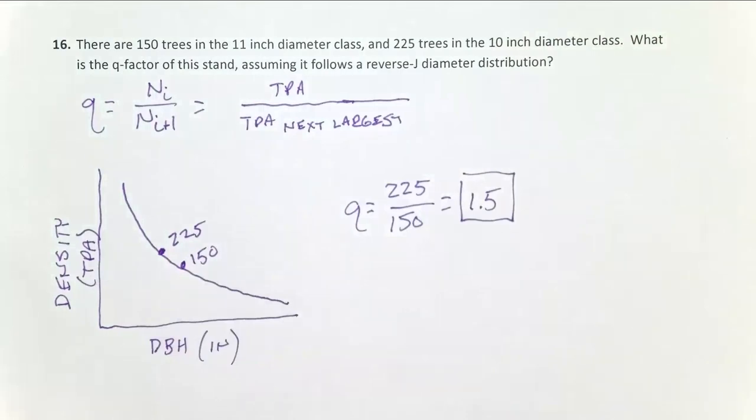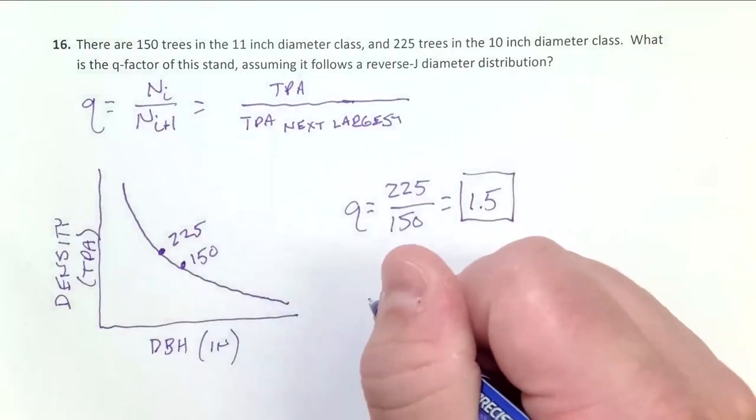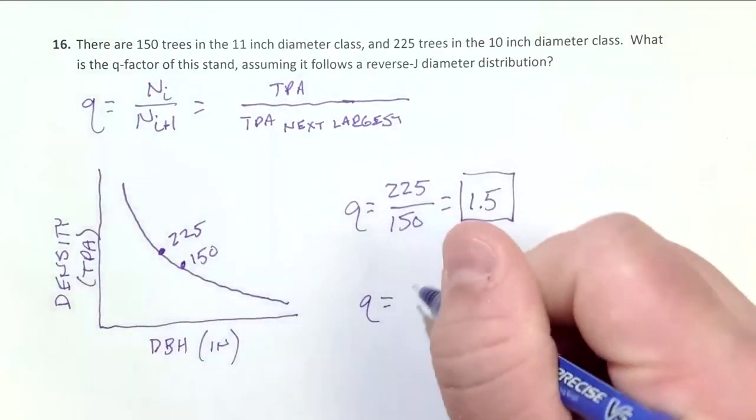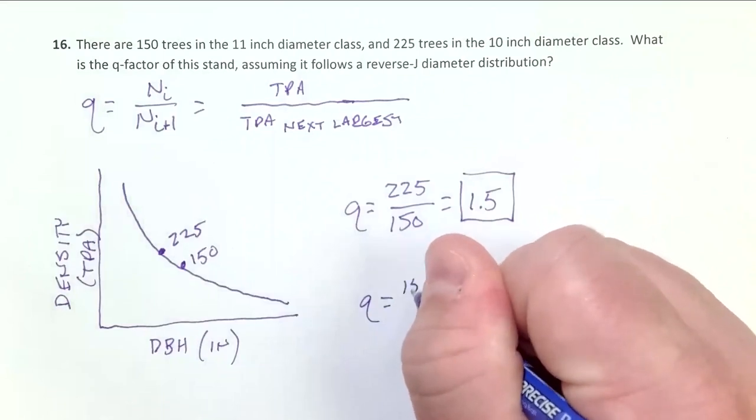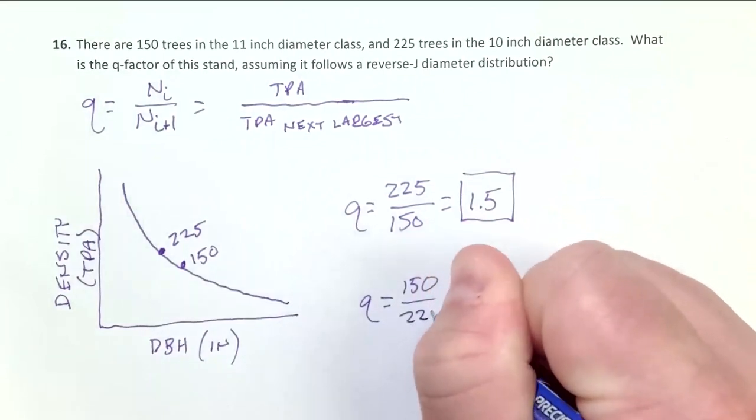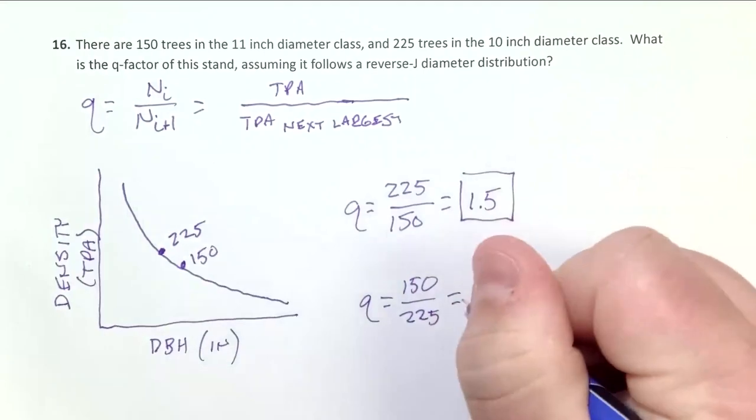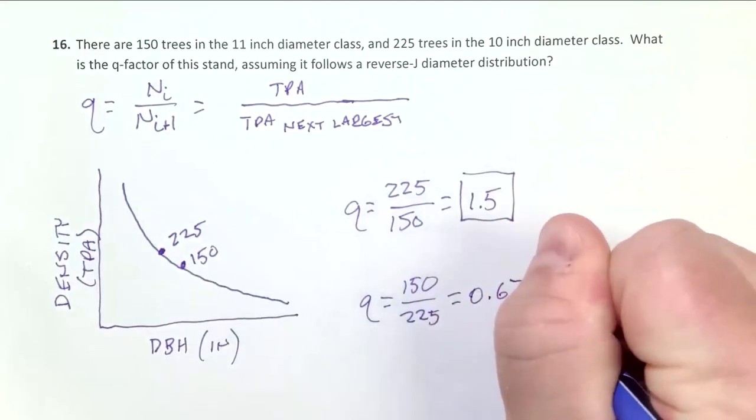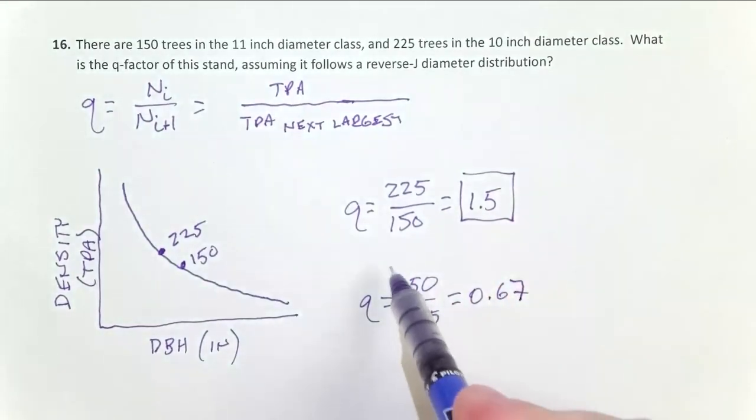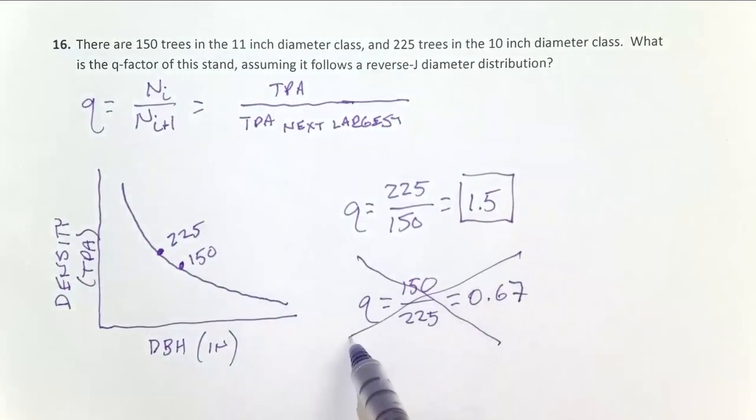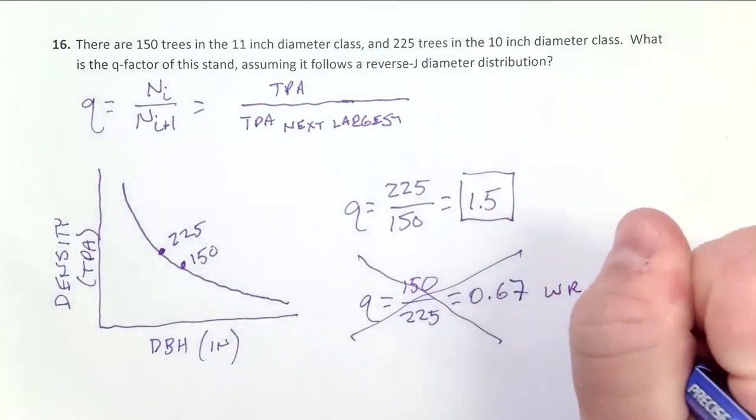Now let me show you a common error, the most common error people make. What people would do if they're making an error is Q equals, they would just accidentally reverse this. They would do 150 over 225, and they would get 0.67. And that is wrong. You did it backwards.